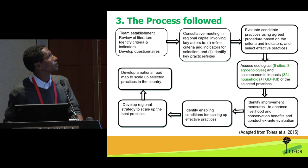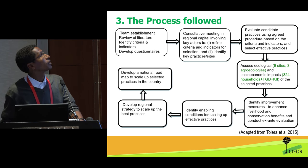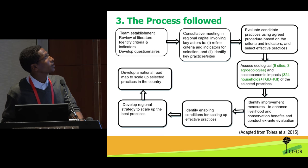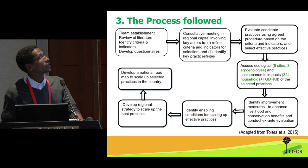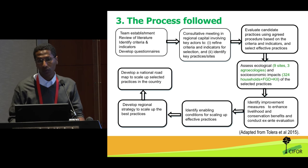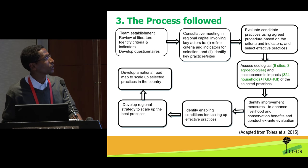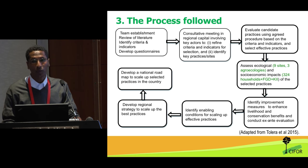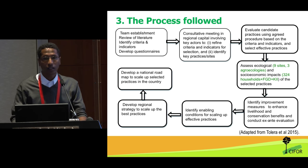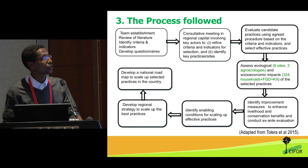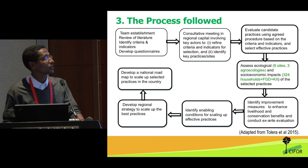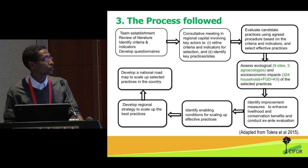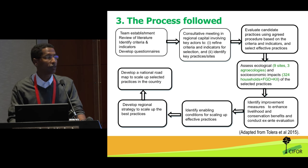The process we followed: a team was established from different parts of the country and institutions. We started with a literature review, identified criteria and indicators, then had several consultative meetings with communities and experts who are practicing exclosures. We then evaluated candidate practices and assessed the ecological and socio-economic impacts. We had nine sites in three agroecological zones and conducted socio-economic surveys of about 324 households, farmer group discussions, and key informant interviews.